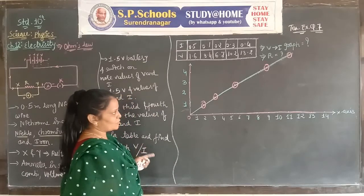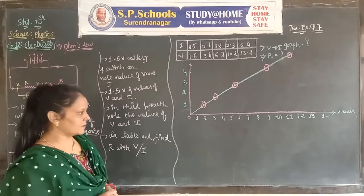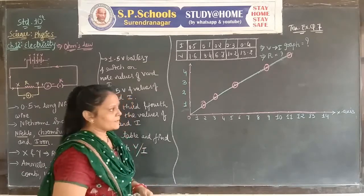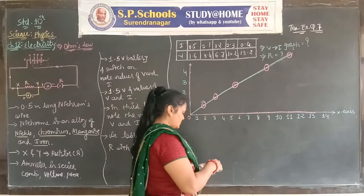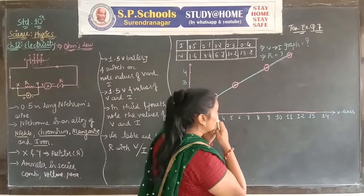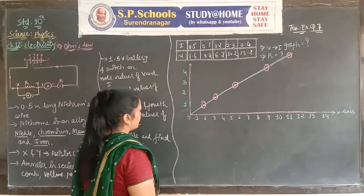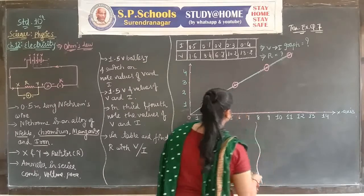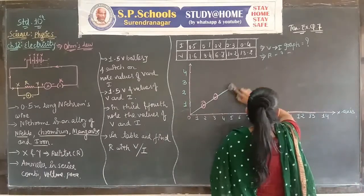The graph always shows a straight line — Ohm's Law is confirmed. If you don't draw the graph as a straight line in the exam, the answer will be wrong. To find the resistance of the resistor, there are two methods.